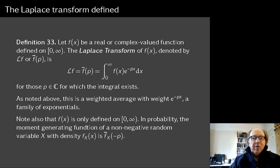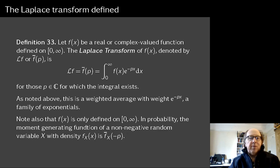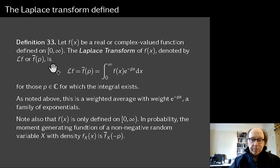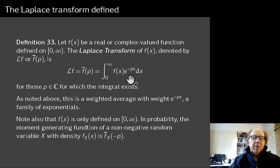Anyway, that's all a digression. Let's get on with something specific and define the Laplace transform. We start with a function f(x) defined on the interval from zero to infinity — no longer the whole real line, only positive values of x. To work out the Laplace transform, which we'll call ℒf or f̄(p), we multiply f by e^{−px} and integrate from zero to infinity with respect to x.